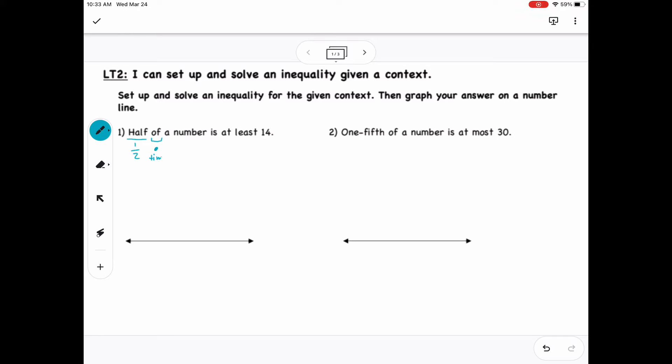So half would be one half, of represents multiplication, so a times sign would go there. Anytime you see the word a number, just like we would solving-wise, it would be a variable, so we'll just use x. Now here, this is where the part that we did at the beginning of learning target 1 will help us out, so is at least is like saying greater than or equal to, so that's why I have a greater than or equal to sign, and then 14 is obviously 14. So then I write my inequality, and it's nice because it's in that order, so one half x greater than or equal to 14.